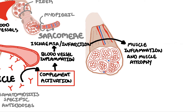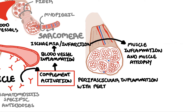The specific term for these changes seen in the muscles of people with dermatomyositis is perifascicular inflammation with perifascicular atrophy.